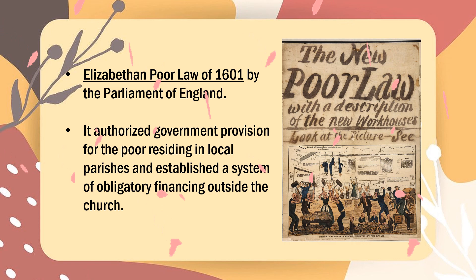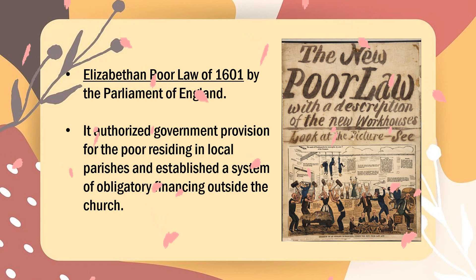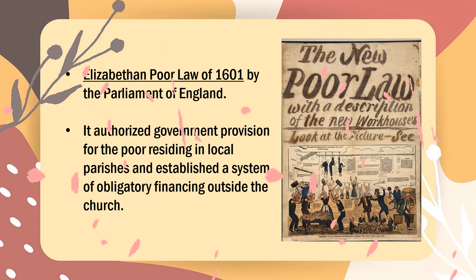A major first step in creating organized social welfare programs was enactment of the Elizabethan Poor Law of 1601 by the Parliament of England. It authorized government provision for the poor residing in local parishes and established a system of obligatory financing outside the church.